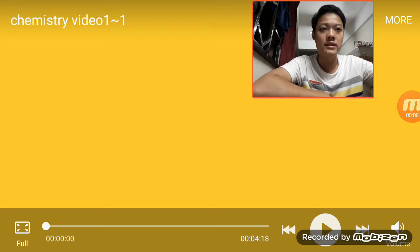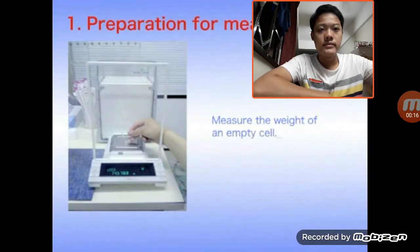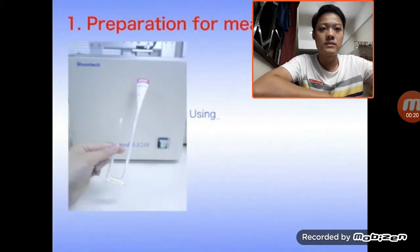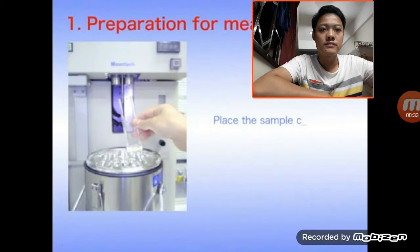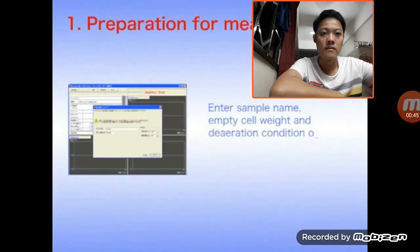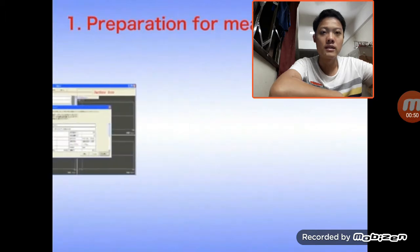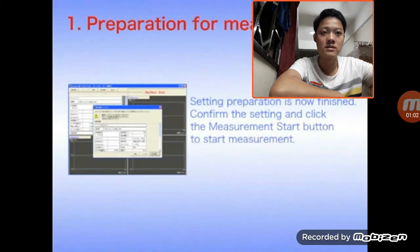Today I will present about the operation principle of the BET surface area. First, measure the weight of the empty cell. Using the sample injector to fill the empty cell with the sample to be measured. The settings will be shown on the screen. When you finish the settings, you can click the measurement start button to start measurement.